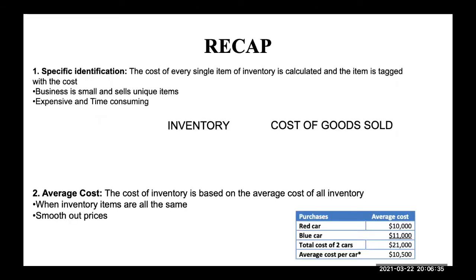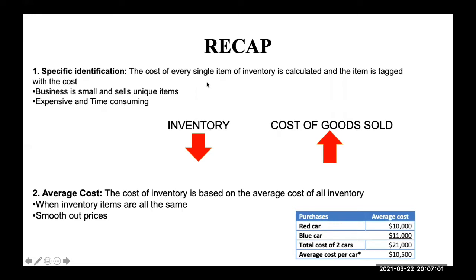To recap, we have learned about two methods. One is specific identification, and the other is average cost. In specific identification, the cost of every single item of inventory is calculated, and the item is tagged with the cost. When an item is sold, the cost of that specific item is moved from the inventory account, where our assets will decrease, and moved to the cost of goods sold account, where our expenses will increase. It works best when a business is small and sells unique items. However, a drawback is that it is expensive and time-consuming.